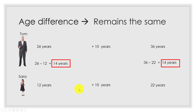The difference in their ages does not change over time. After 20 years their difference would still be 14 years. This is the key concept we are going to use for age-related problems: the age difference remains the same.